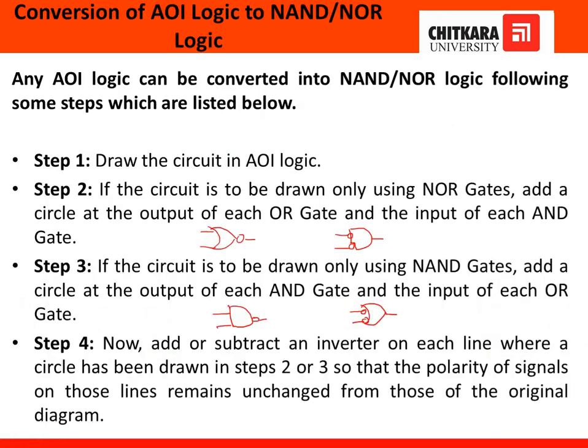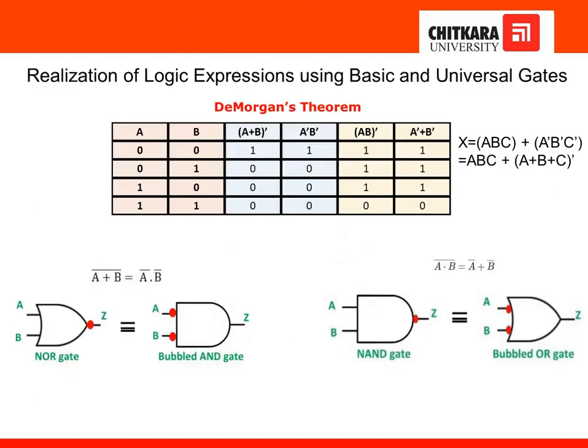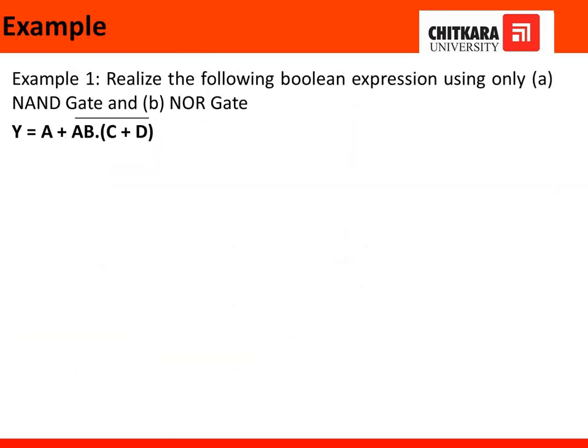In Step 4, we add or remove inverters on each line wherever circles (bubbles) have been drawn in Steps 2 or 3, so that the polarity of the signal does not change due to placing these bubbles at inputs or outputs.